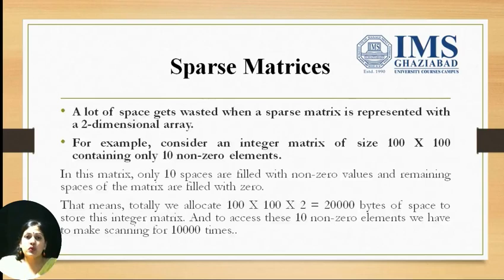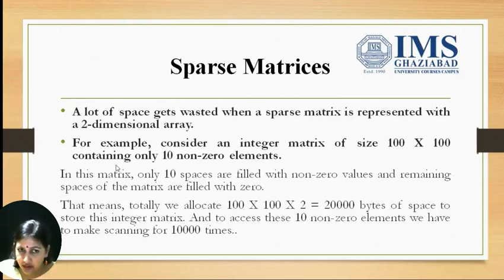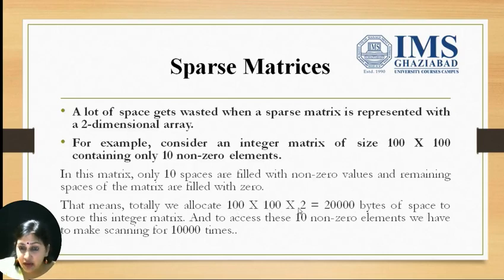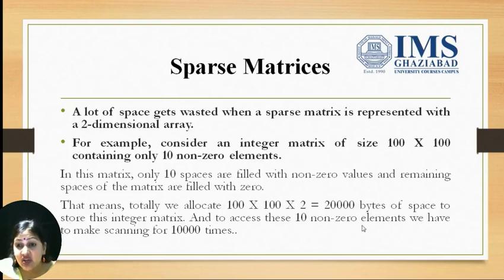When we store sparse matrices in the form of a two-dimensional array, a lot of space gets wasted. For example, if we have an integer matrix of size 100 by 100 and it contains only 10 non-zero values, then to store that matrix — 100 rows and 100 columns — we are allocating 20,000 bytes of space in memory, because each integer needs two bytes. Among those 20,000 bytes, only 10 non-zero elements need to be stored, and to access them we have to scan 10,000 memory locations every time.